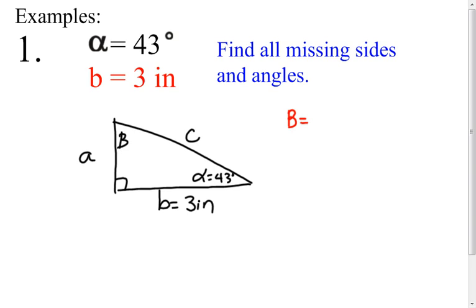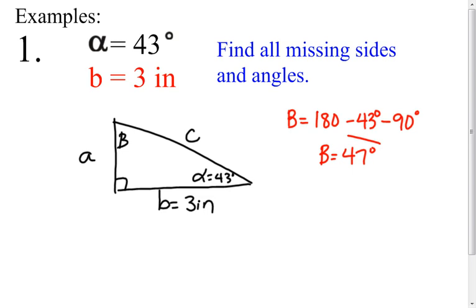I am going to find beta first because it's very easy to do. There are 180 degrees in a triangle, so I will go 180 minus 43 degrees for angle alpha minus 90 degrees for the right angle. If I do 180 minus 90 minus 43, angle beta will be 47 degrees.